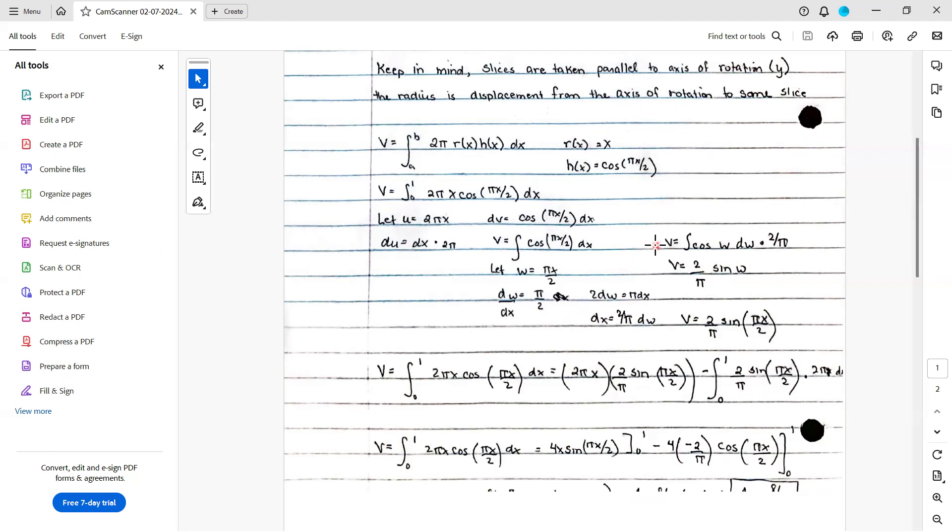Now, if we plug in to the integration by parts formula, we have the integral from 0 to 1 of 2 pi x cosine pi x over 2 dx is equal to u, which is 2 pi x, times v, which is 2 over pi times the sine of pi x over 2, minus the integral of v du, which is 2 pi.